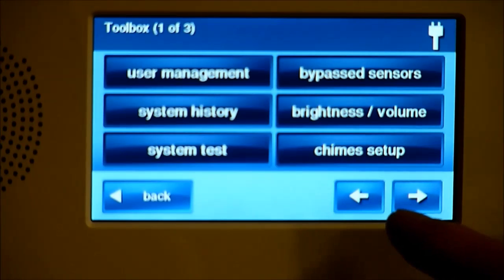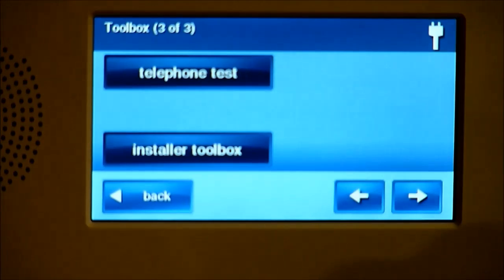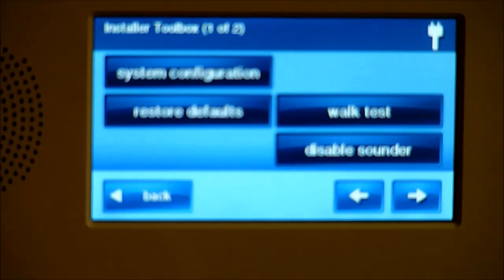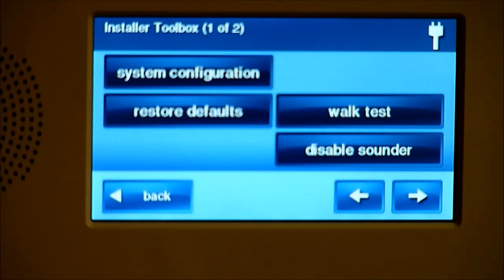Once you're in programming, we want to hit the left arrow and scroll over and select Installer Toolbox, and then we want to go to System Configuration.